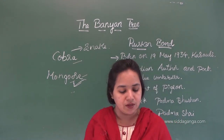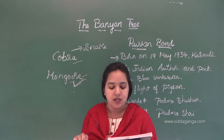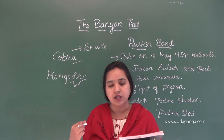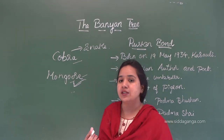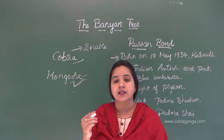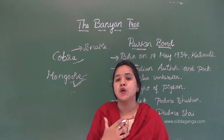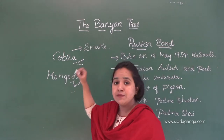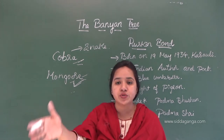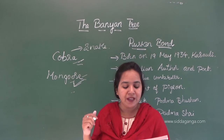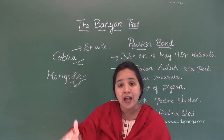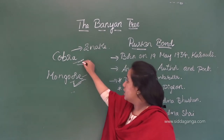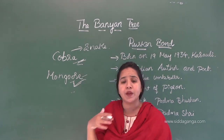The cobra assumes a posture of defense and attempts to reach the animal by a sweeping strike. Defense means it is protecting itself from the mongoose's attack. It also attempts to reach the mongoose. But the quick-moving mongoose jumps out of reach and comes at the snake from another direction. The snake was ready to attack but the mongoose escapes and approaches from another angle.